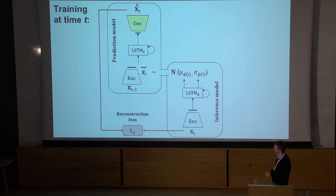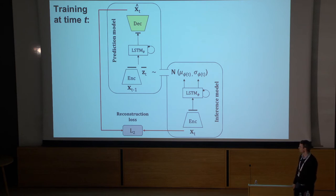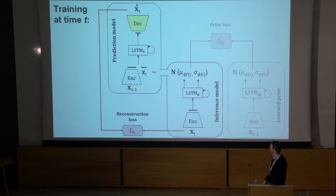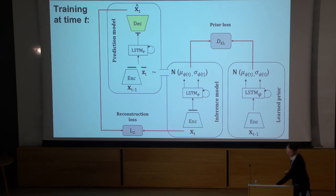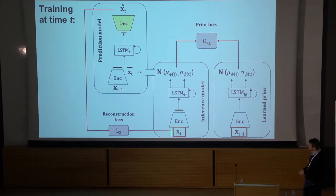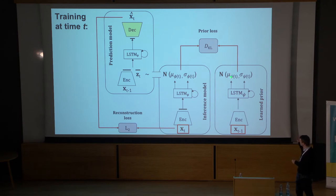This whole setup is trained using the evidence lower bound (ELBO). There are two terms: a reconstruction loss measuring the difference between your true future frame and the prediction — we use a simple L2 loss, though you could augment this with an adversarial term. We also learn a prior. The key difference between the two pathways is that one gets access to the true future frame and the other only sees past information. A KL term pulls these two Gaussians close to each other, so the prior learns something about how to predict the latent variables Z from past frames.